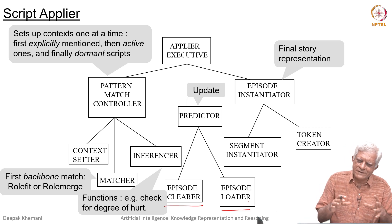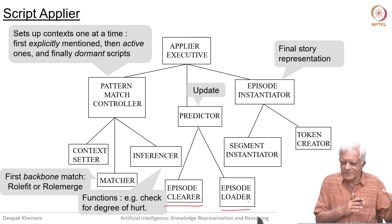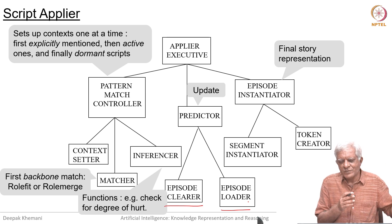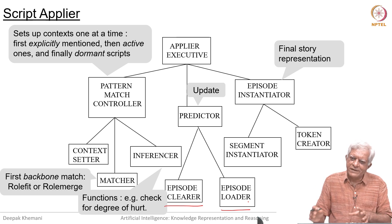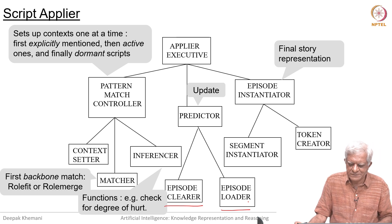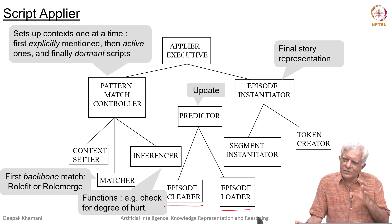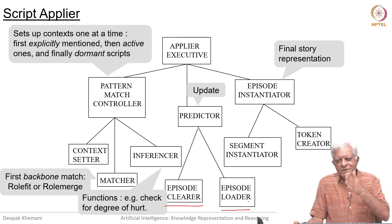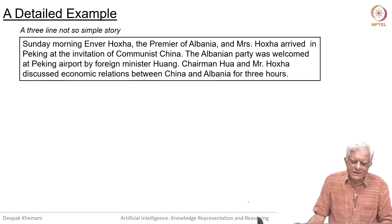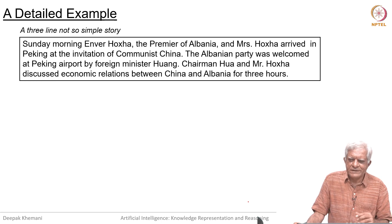This is the general high-level description of how the script applier operates. The applier receives input from PP memory, which has semantic knowledge about the roles the script uses, which itself uses input from LE, which converts English into conceptual dependency. This finally generates the story, which is then taken over by question answering or summary generation. At the end, we have an explicit representation of the story, including parts not stated explicitly in the verbal story but inferred because we know which script is active. We will look at a detailed example in the next session.